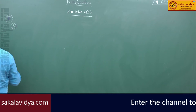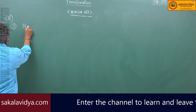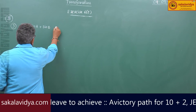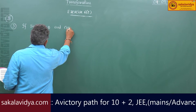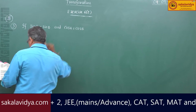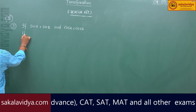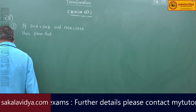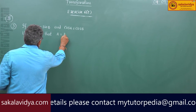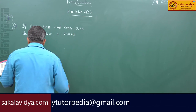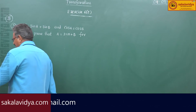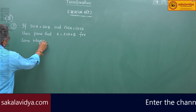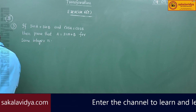Third problem. If sin a is equal to sin b and cos a is equal to cos b, then show that a is equal to 2nπ plus b for some integer n.